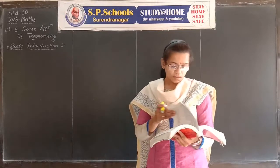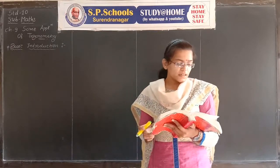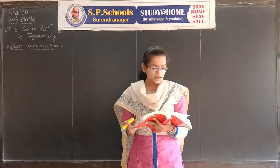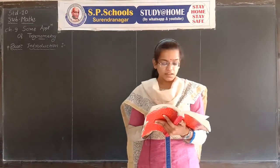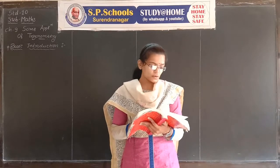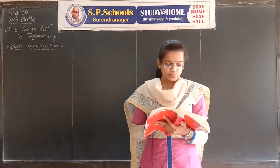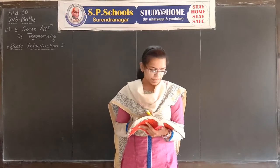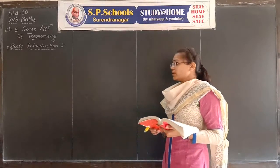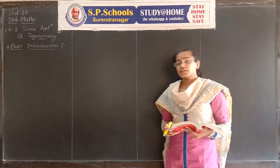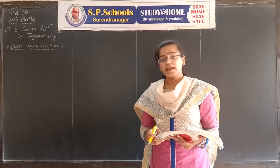The knowledge of trigonometry is used to construct maps and determine the position of an island in relation to longitude and latitude. In this chapter we will see how trigonometry is used for finding the heights and distances of various objects without actually measuring them.